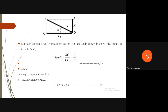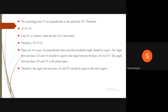From the rectangle ABCD extracted from the previous diagram: consider the plane ABCD shaded by dots in figure. From triangle BCD, tan(alpha) = BC/CD. Now BC = AD = PS. Therefore, tan(alpha) = PS/PT (Equation 1), where PS is the separating force and alpha is the pressure angle. Therefore, PS = PT·tan(alpha) (Equation 2).